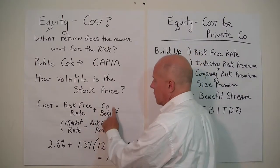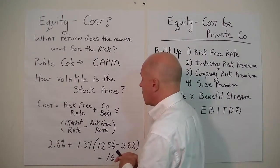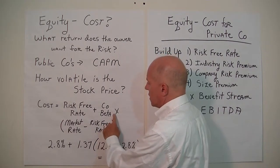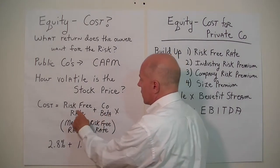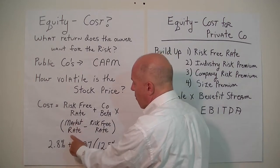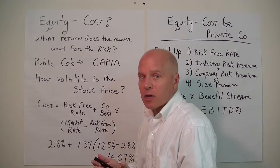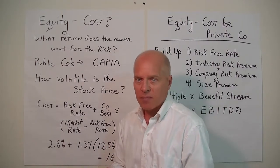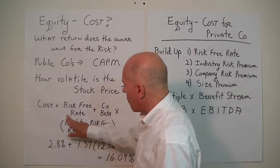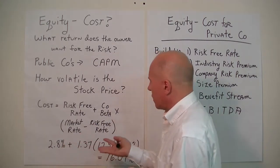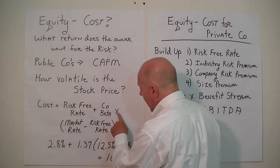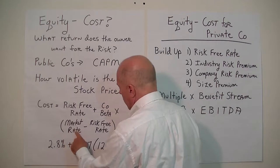For every publicly traded company, there are subscription services that publish beta coefficients, and they sometimes vary in how they calculate it. We can easily get the risk-free rate, figure out the company's beta coefficient, and determine the overall market rate of return — for example, what we'd get if we invested in the Standard & Poor's 500. The CAPM formula is: risk-free rate plus the beta coefficient times the difference between the market rate and the risk-free rate.